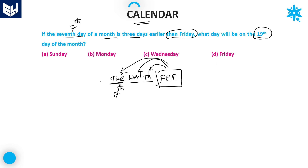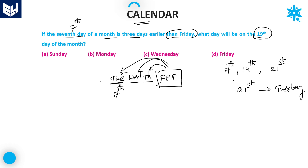If the seventh day is Tuesday, then automatically the fourteenth day is also Tuesday, and the twenty-first day is also Tuesday. If the twenty-first day is Tuesday, then the twenty-eighth day will be Monday. And the nineteenth day will be Sunday.